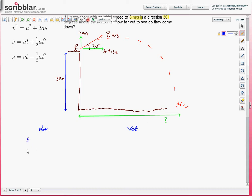So, horizontal, S, U, V, A, T. And vertically, S, U, V, A, and T. Horizontally, from the beginning to the end, where it lands in the water. What is the horizontal distance? That's the green distance that we don't know. So, I'm just going to call that x. That's what we're trying to work out. U, initial velocity, that's the 6.9 meters per second.